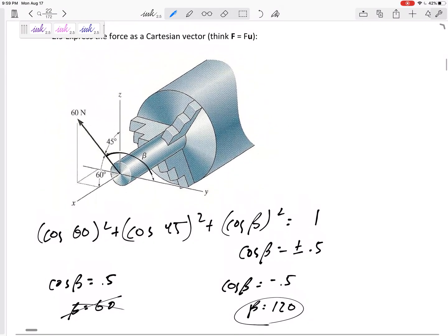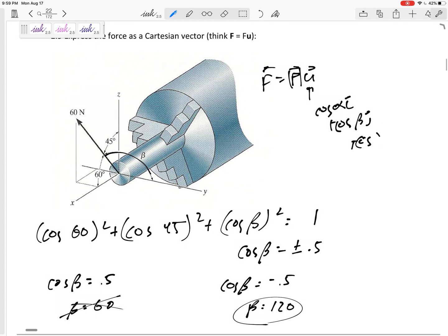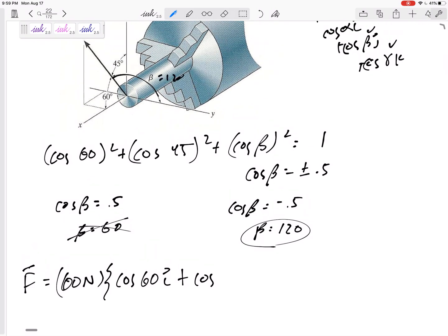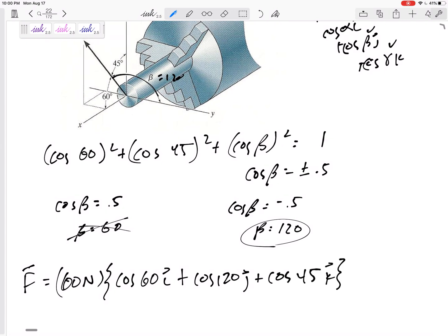So now, because they are coordinate direction angles, I'm thinking F equals FU, where U is cosine alpha I plus cosine beta J plus cosine gamma K. And I know alpha, beta, gamma. I know the magnitude. I'll write it as a vector. So this force would be 60, it's a magnitude times cosine alpha. It is 60 degrees to I plus cosine beta. Now, I always do this to the positive axis. So what is its angle to the positive Y axis? That would be this 120. Cosine 120 in the J. Plus cosine 45 in the K. So that's what I would do.